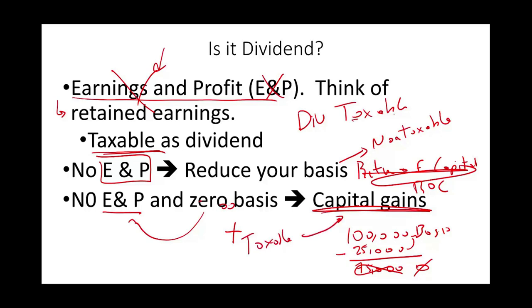So a distribution could be a dividend — taxable if it's coming out of earnings and profit — or a return of your basis, which is non-taxable because they're giving you back your own money, or capital gains if they give you more than your investment with no earnings and profit available. We're going to see that the dividend could be taxable as ordinary or as qualified.